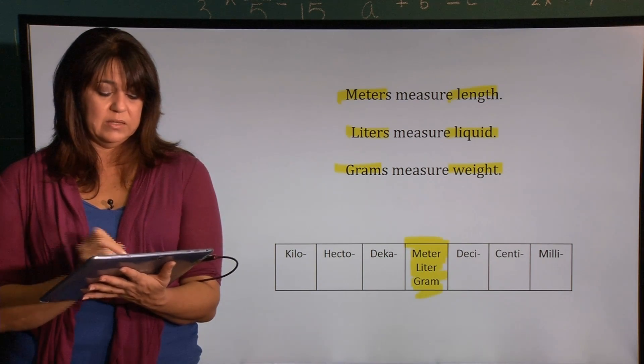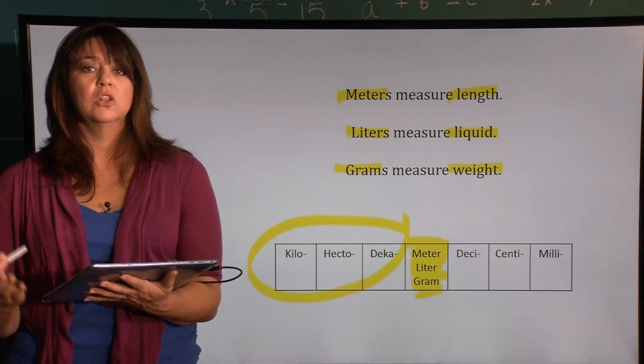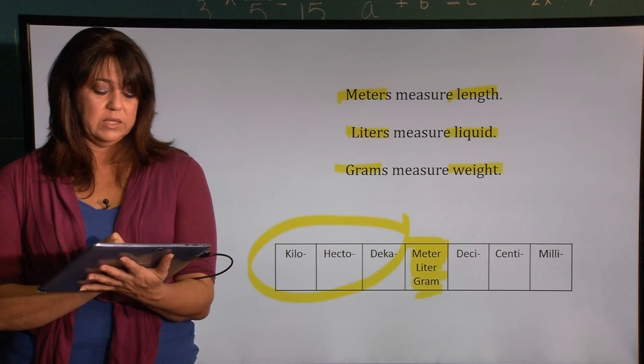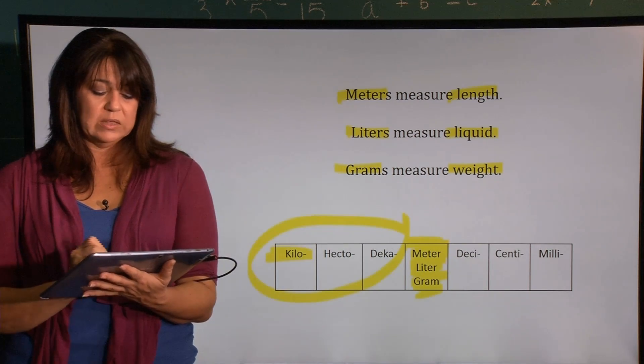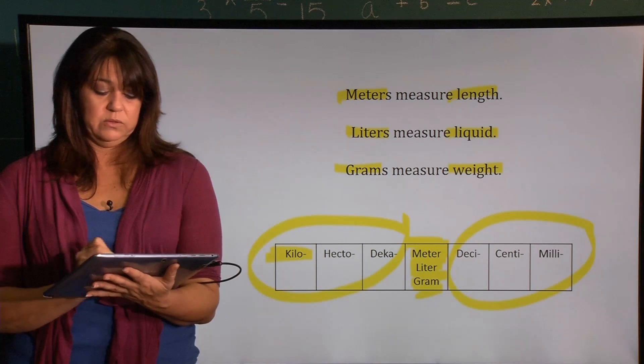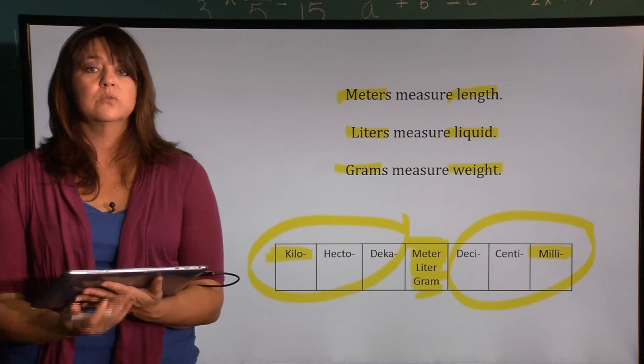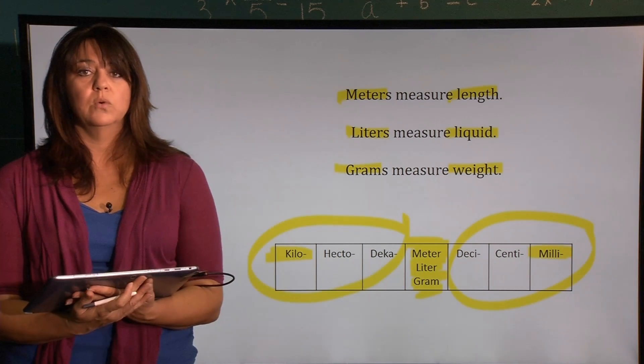When we look at these abbreviations, we're looking at larger amounts. The kilo is the largest prefix. If you're looking at these prefixes, they're very small amounts. The milli is the smallest prefix you're going to be working with.